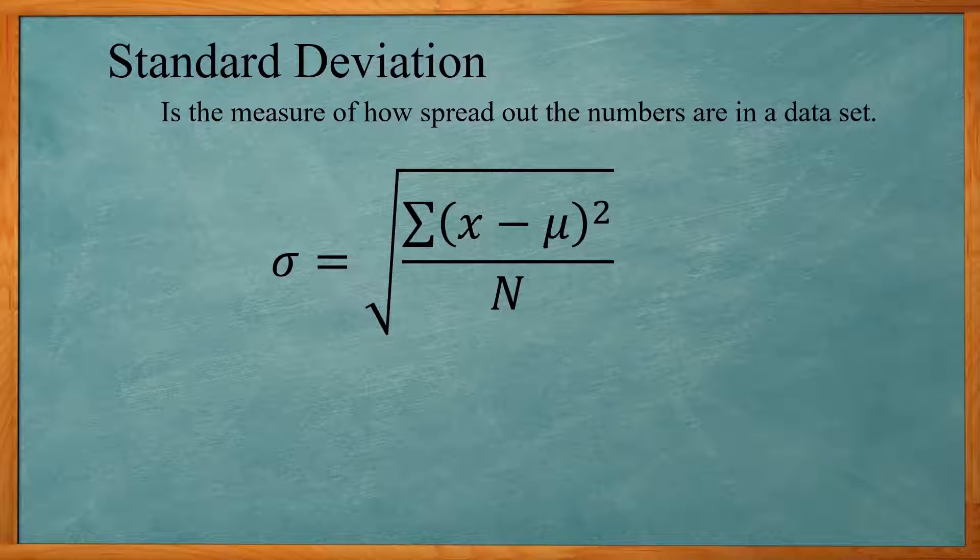The standard deviation, this is the measure of how spread out the numbers are in the data set. You see this formula here, the summation of x minus mu, which is your data point minus your mean, squared, divided by n, the number of data points, and then the square root of that whole thing.